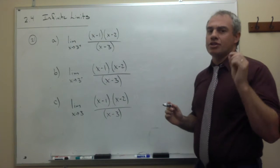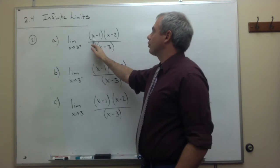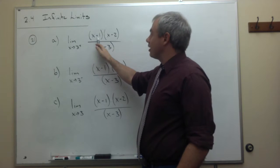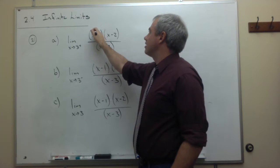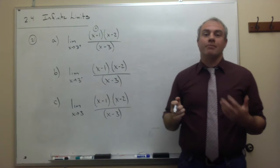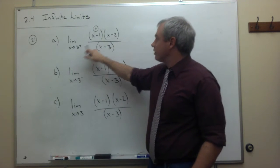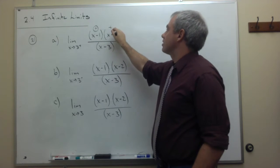Okay, if we take a number just slightly bigger than 3, then we get something slightly bigger than 3 minus 1. That's a positive number, so I'm going to put a little positive above that. If I take something just slightly bigger than 3 and subtract 2, that's also positive.